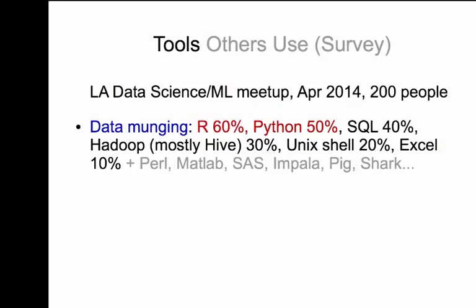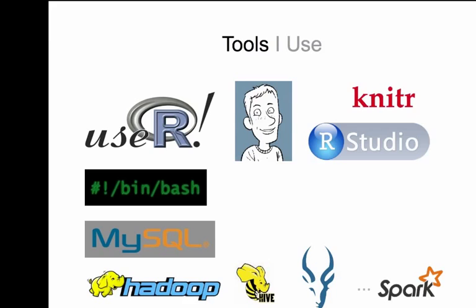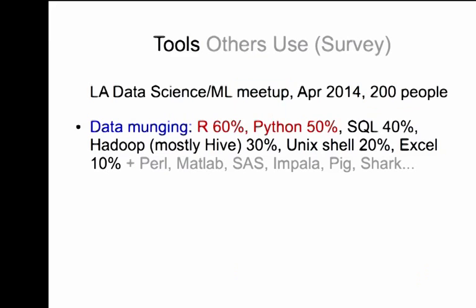Impala and all the other options, they make this really possible. What tools other people use? I ran this survey at the last data science machine learning meetup. There were 200 people. I had questions about three sections. One was data managing, visualization, and machine learning. It seems like people are using kind of the same tools as I'm using except for Python. I have nothing against Python. I love Python. If R didn't exist, I would use Python.